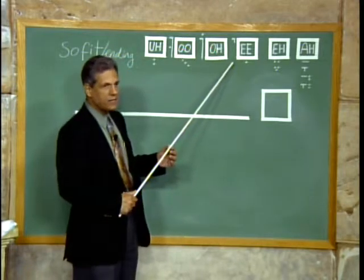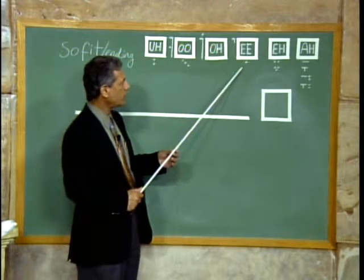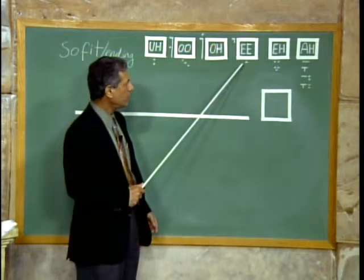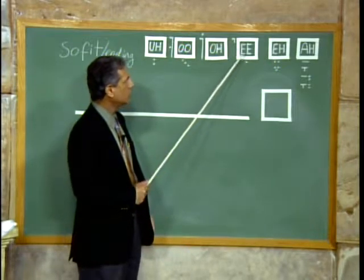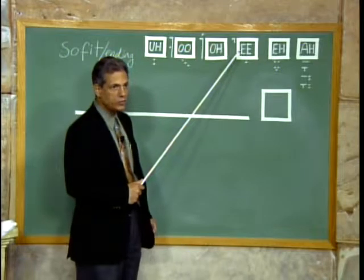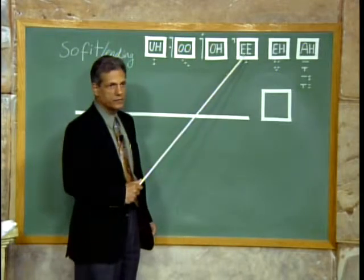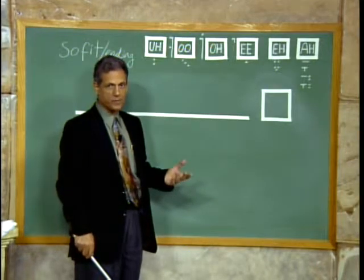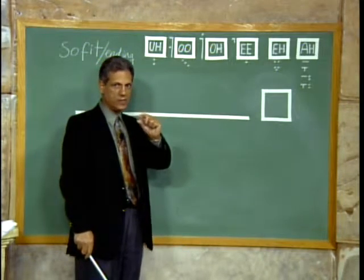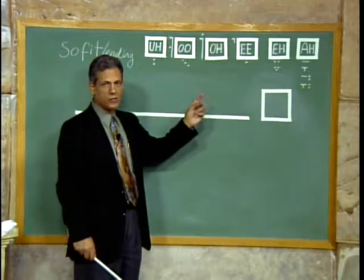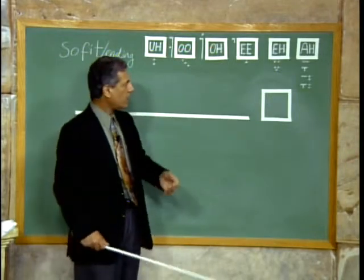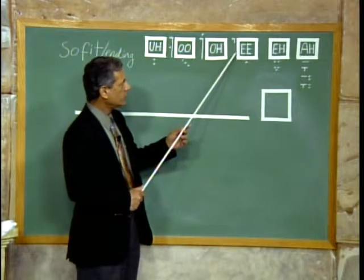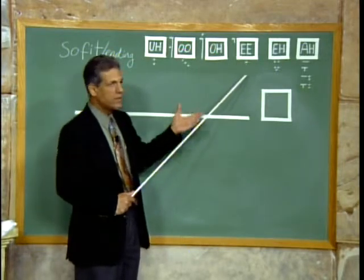The E sound is produced by putting a dot underneath the letter, or a letter Yud next to the letter. The letter Yud is the tenth letter of the Hebrew Aleph Bet and it's the smallest letter. It's used occasionally as a grammatical helper. In this case, the Yud next to the letter produces the sound of E.